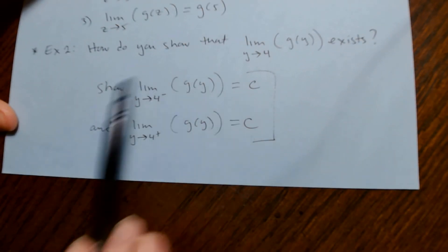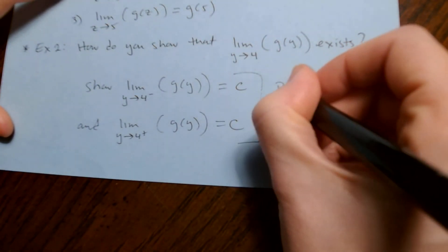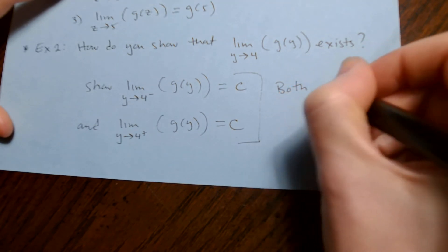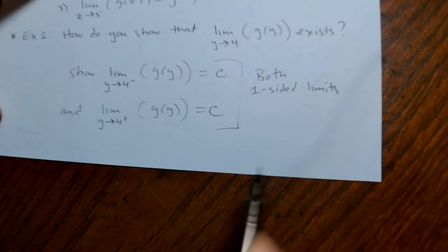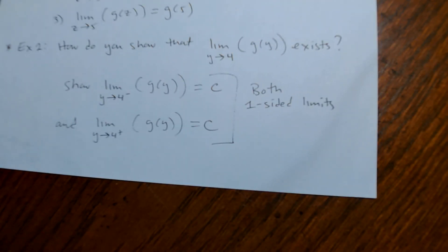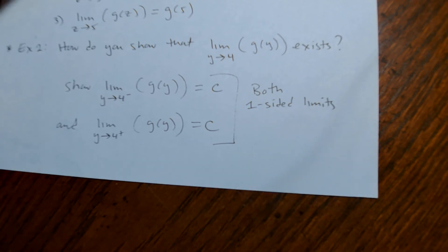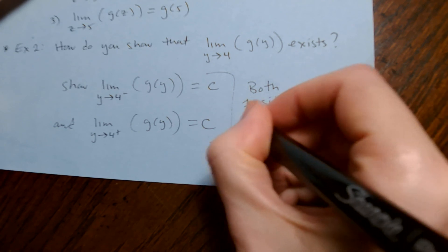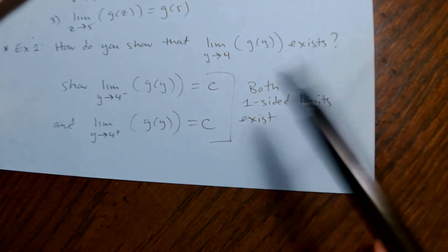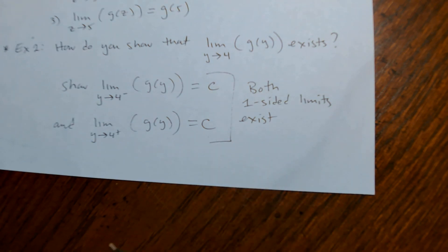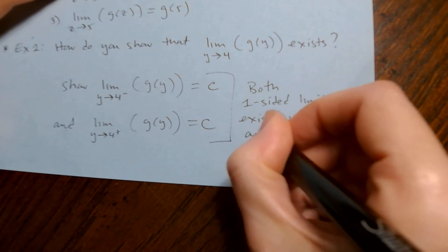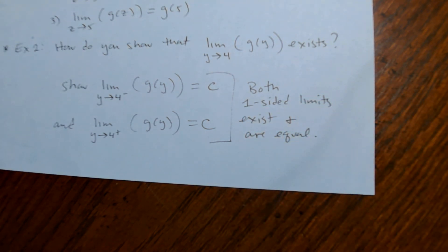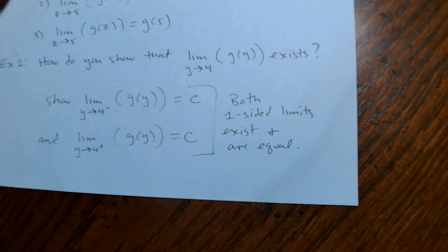Essentially, showing this demonstrates that both one-sided limits—the limit from the left and the limit from the right—exist. They exist because they each come out to be a concrete number. But not only must they each exist, they must also be equal. Both one-sided limits exist and are equal. That is how you show that a certain limit exists.